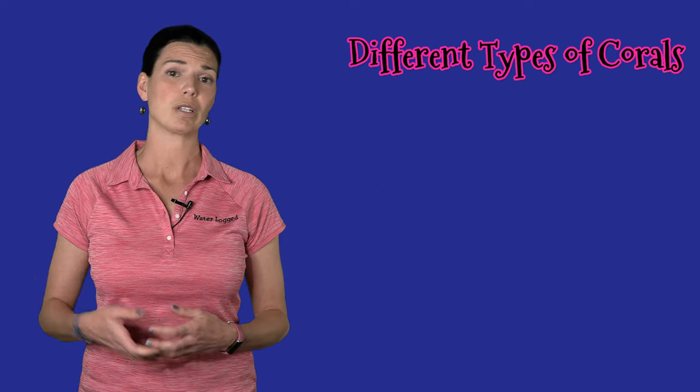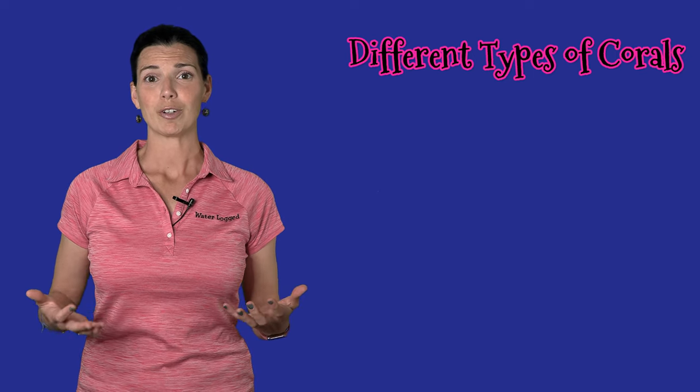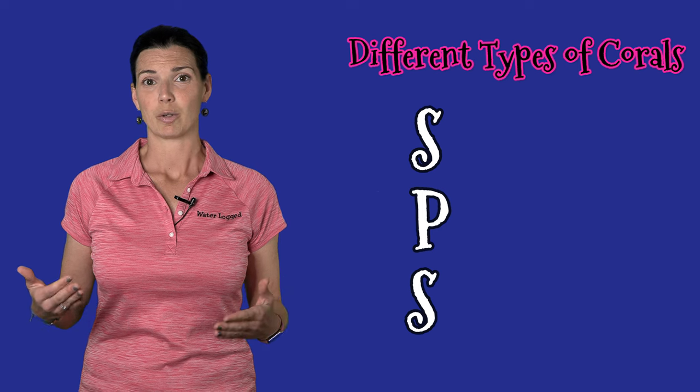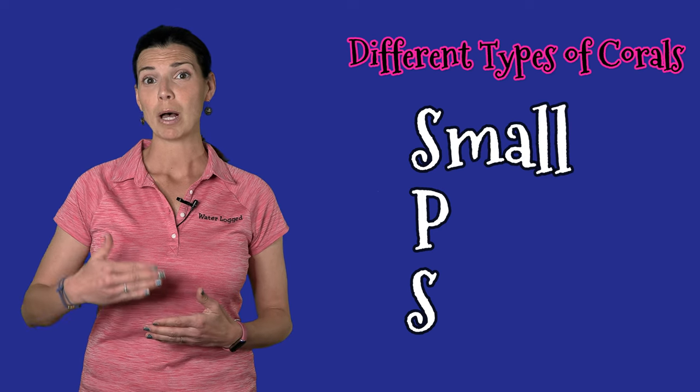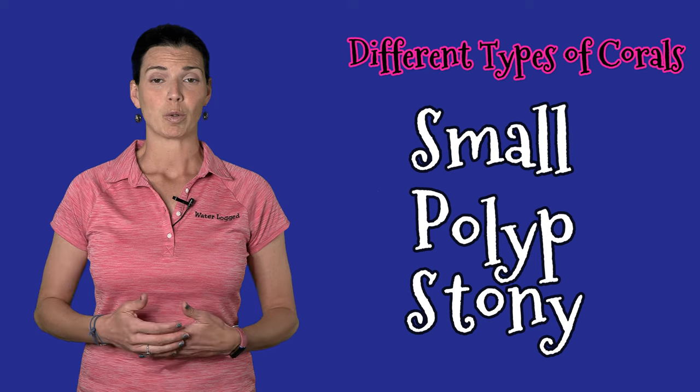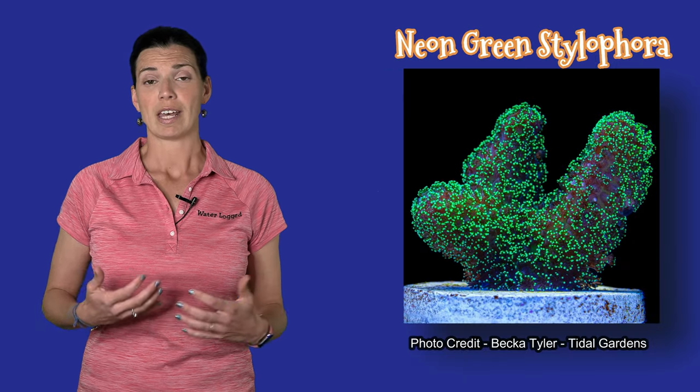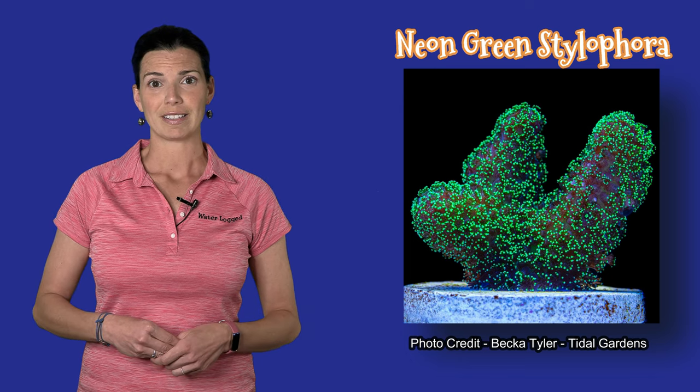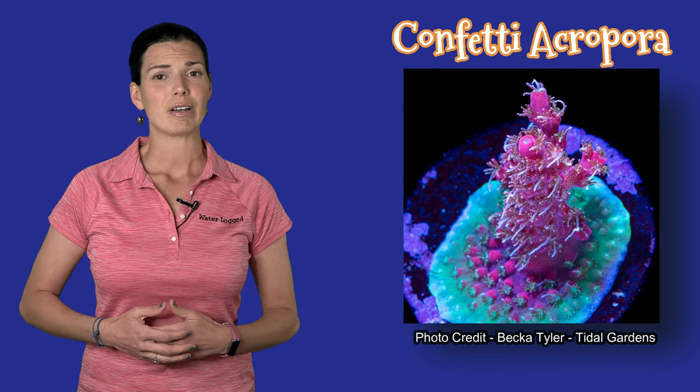Let's go over a couple of those. First off is SPS corals. That stands for small polyp stony coral. These species of corals are typically going to need a lot more light and a lot more flow than the other corals that are on this list.